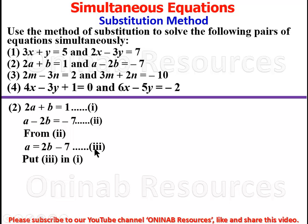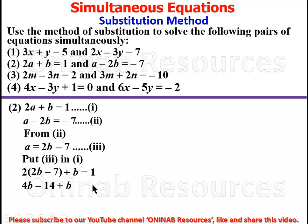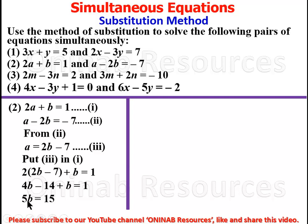Since equation two has been transformed into equation three, we substitute equation three into equation one. This gives 2(2b - 7) + b = 1. Expanding: 4b - 14 + b = 1, so 5b = 1 + 14 = 15, and therefore b = 3.